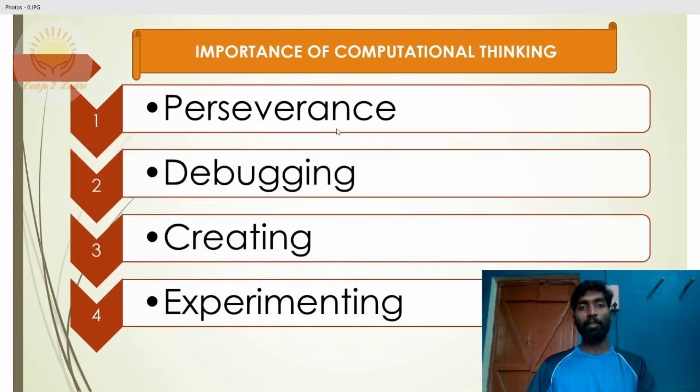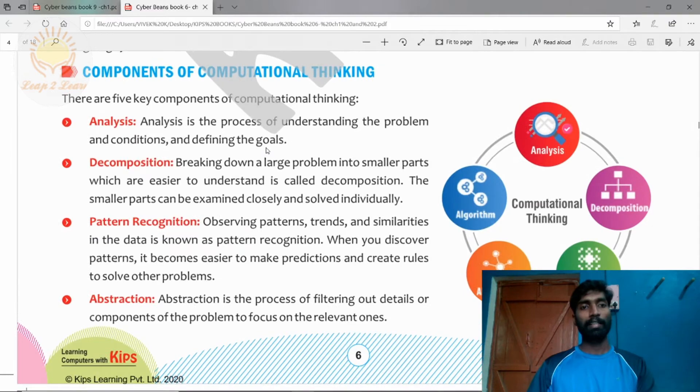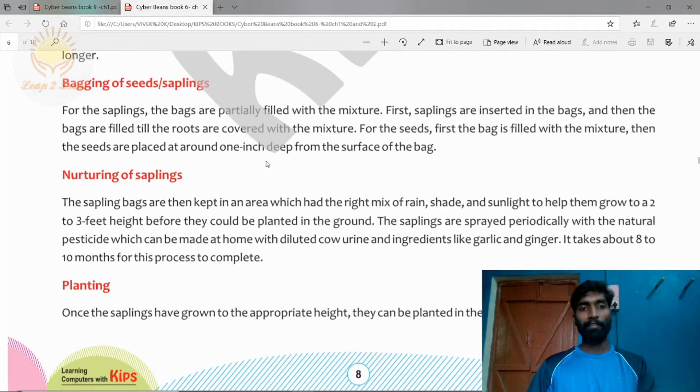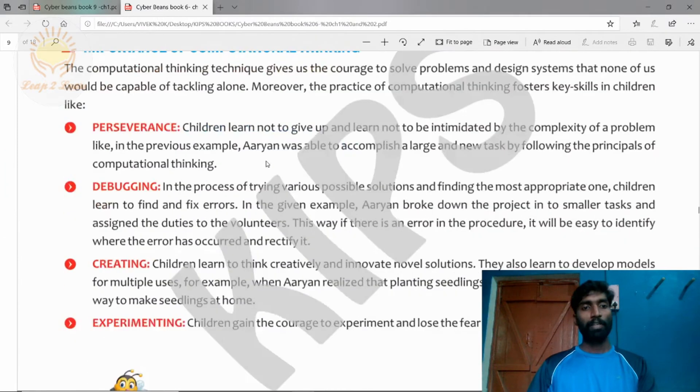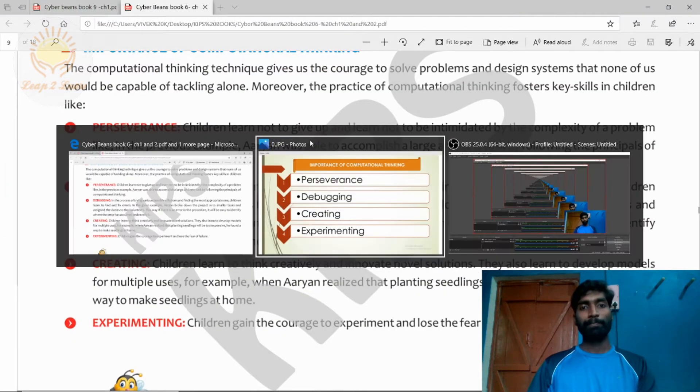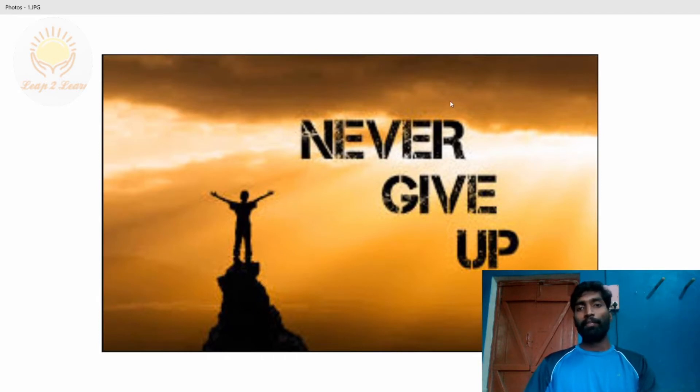That is called perseverance. In the book, kindly see the definition. Importance of computational thinking, first perseverance: children learn not to give up. We will never give up any tough problem or any type of situation. We will not step back. This type of attitude we will learn from perseverance.